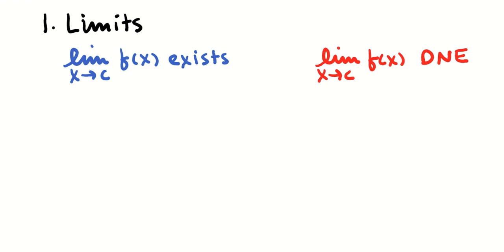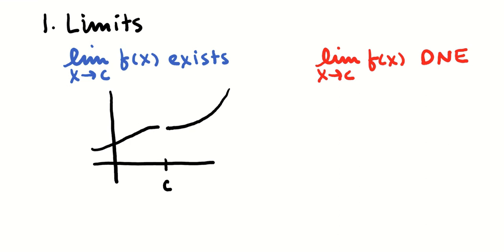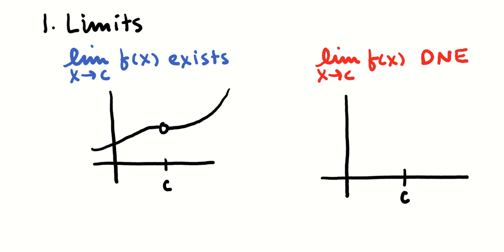We started with limits, and there are really only a few things we need to know. The limit of f(x) as x approaches c exists if the two one-sided limits as x approaches c exist and agree. This could be a continuous function or a removable discontinuity. The limit doesn't exist where the two one-sided limits don't agree, or where we have a vertical asymptote.